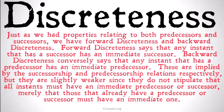Backward discreteness, conversely, says that any instant that has a predecessor has an immediate predecessor. Similarly, it's not going to imply that time must have no beginning, because the first instant isn't going to have a predecessor at all, so it doesn't need to have an immediate predecessor.